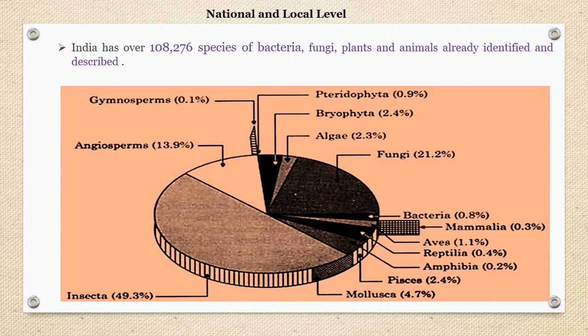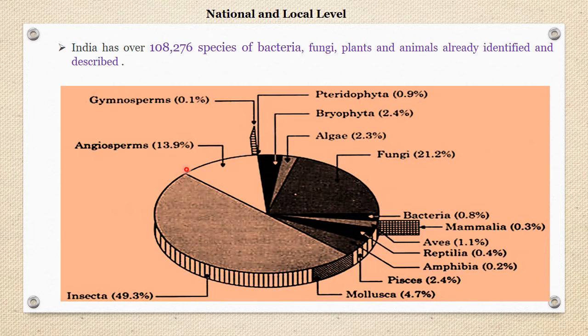India has over 1,08,276 species of bacteria, fungi, plants, and animals already identified and described. Out of these, insects constitute 49.3 percent, followed by fungi at 21.2 percent, and flowering plants at 13.9 percent. In terms of the number of species, the Insecta alone constitute nearly half of the biodiversity in India, as depicted in this picture.